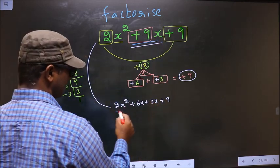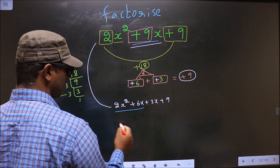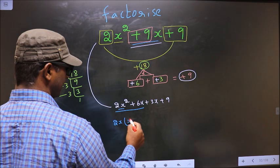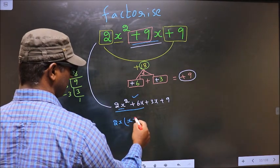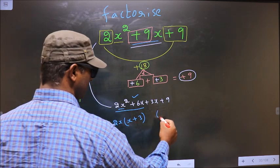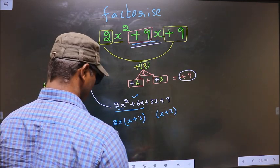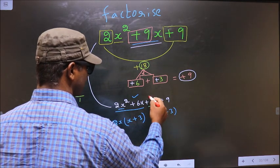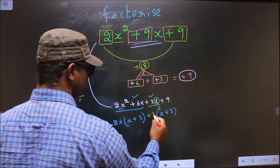Next, from these two terms what can you take out common is 2x. So here you get x and here you get +3. Whatever you have got here, here also you should get the same thing. Now from this x has gone inside, so outside you are left with +3.